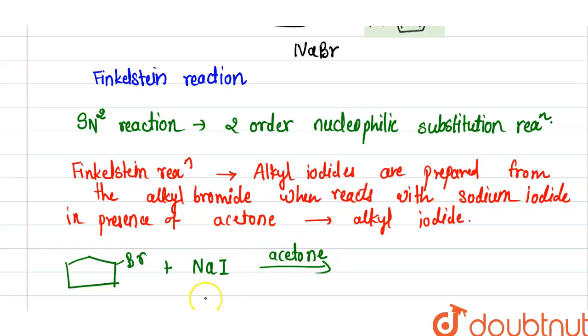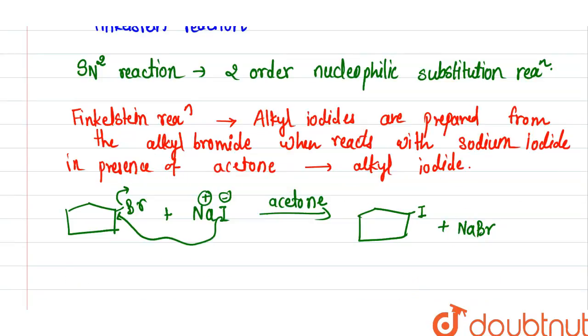Then simple SN2 type reaction. Na+ and I-. So I- attacks on the position of this carbon. So formation of iodocyclopentane plus NaBr. So the name of the compound is iodocyclopentane.